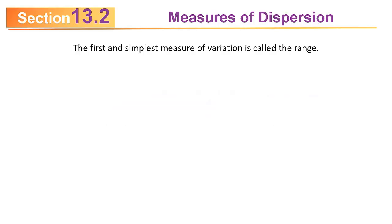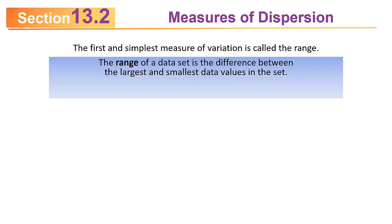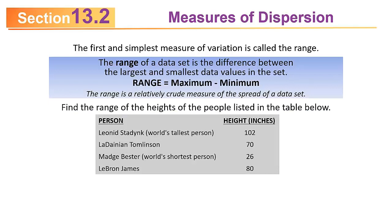The first and simplest measure of variation is called the range. The range of a data set is simply the difference between the largest and smallest data points. It's a relatively crude measure because it doesn't say anything about the values in between the minimum and maximum values.